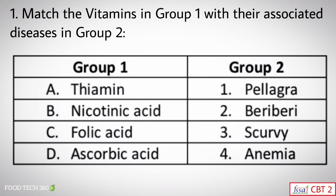Question number one: Match the vitamins in Group 1 with their associated diseases in Group 2. Group 1 has vitamins: thiamine, nicotinic acid, folic acid, and ascorbic acid. Group 2 contains associated diseases: pellagra, beriberi, scurvy, and anemia. Thiamine deficiency leads to beriberi, nicotinic acid deficiency leads to pellagra, folic acid deficiency leads to anemia, and ascorbic acid deficiency leads to scurvy.